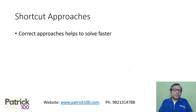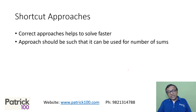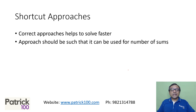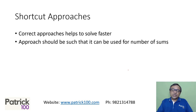What are shortcut approaches? Normally, a shortcut approach helps you solve things faster. Importantly, the approach should be applicable to a large number of sums. Formulas are normally only applicable to one specific type of sum, which makes them less useful. An approach — like using options, substituting values, or approximation — can be applied to any number of sum types. If you know these approaches, you can ace almost all types of quant sections.